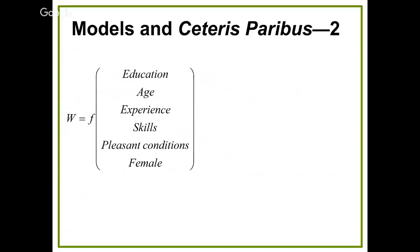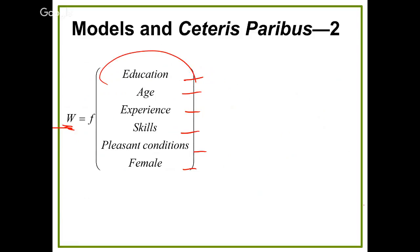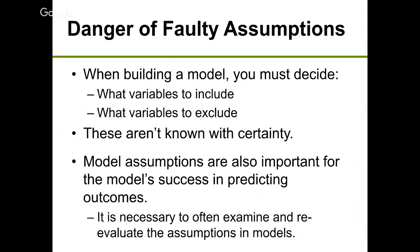Here is a simple model in economics: wage W is a function of education, age, experience, skill, working conditions, and gender. These are measurable variables. There are also other variables not part of this equation — we assume ceteris paribus, everything else equal. This is what labor economists study — different factors that affect each person's wage.